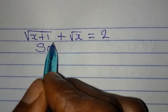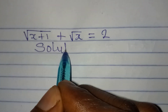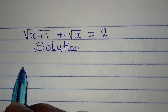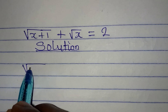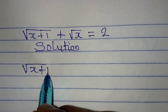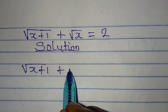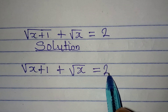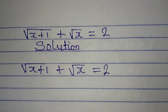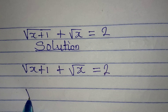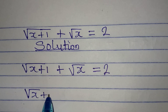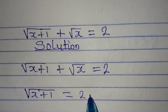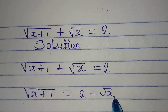Hello everyone, let's solve this problem very quickly. We have square root of x plus 1, plus square root of x, equal to 2. The first step I will take is to isolate the radical: square root of x plus 1 equals 2 minus square root of x.